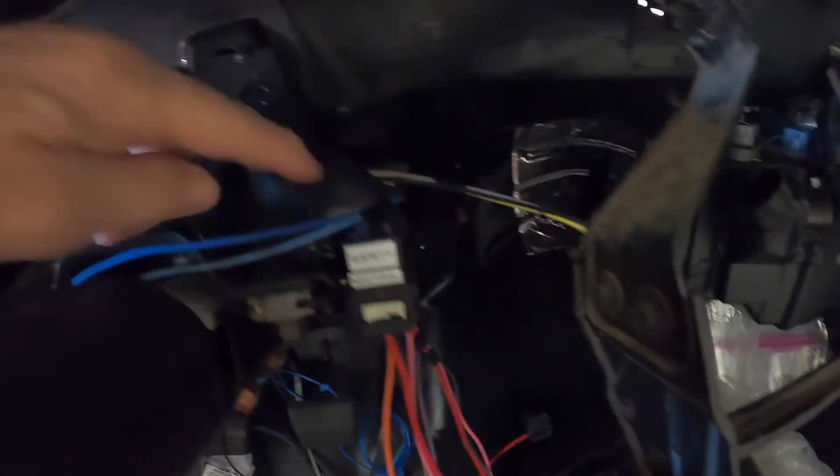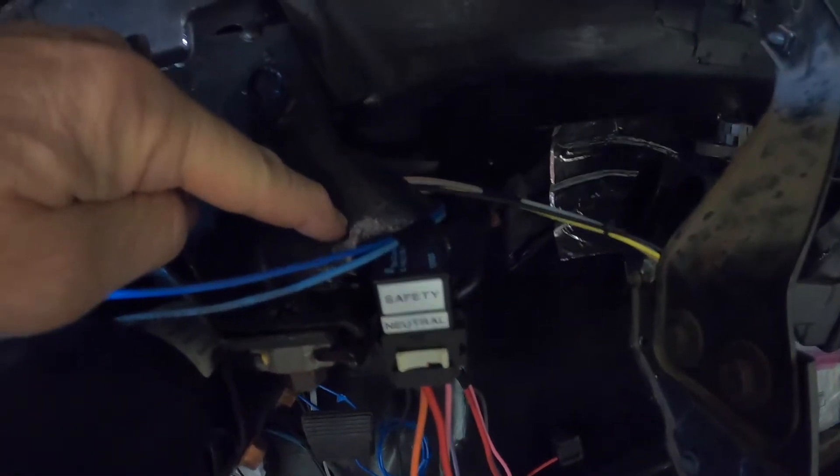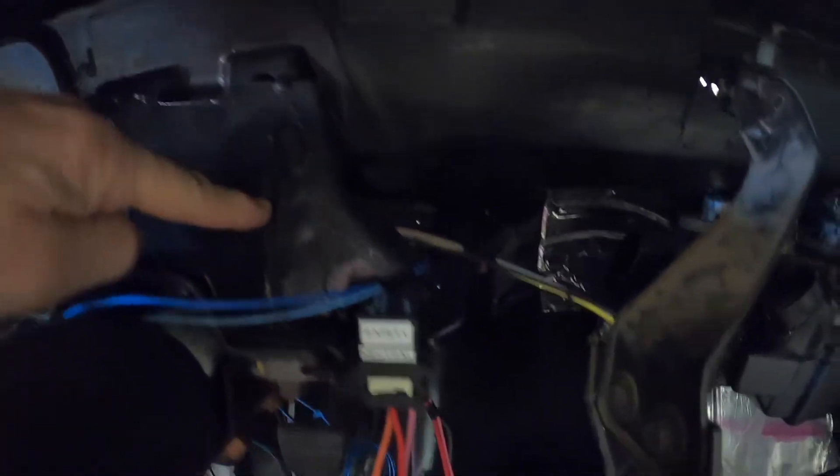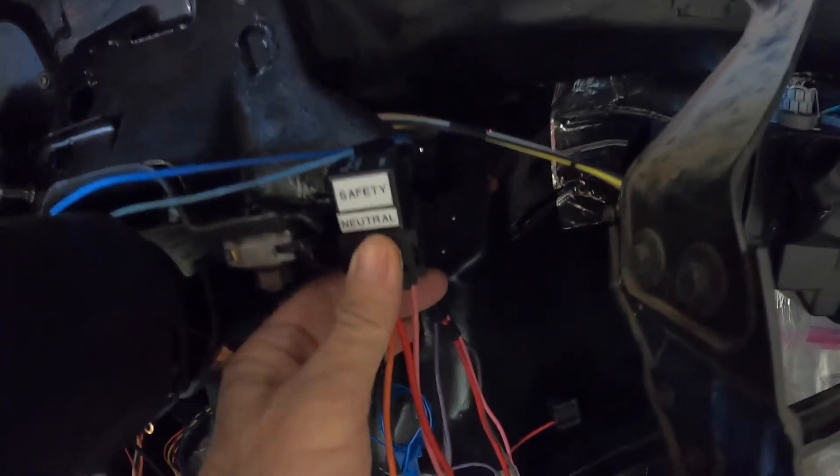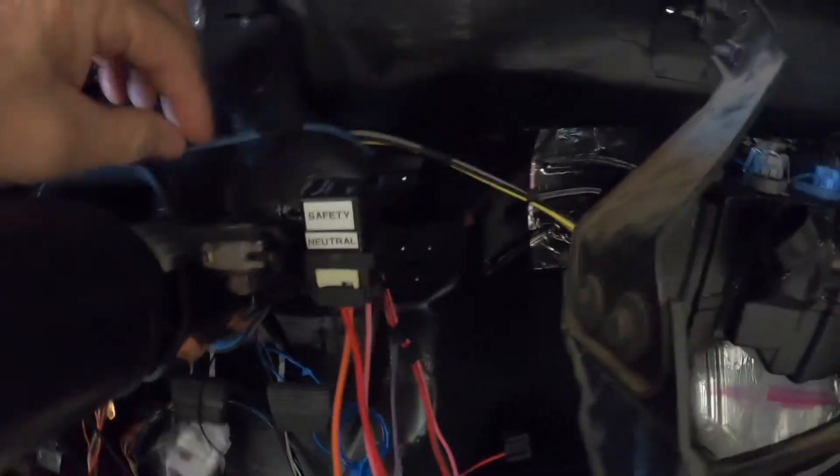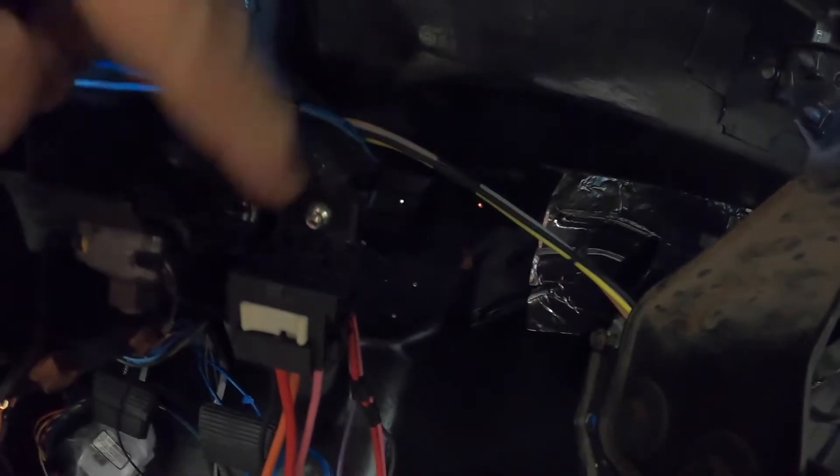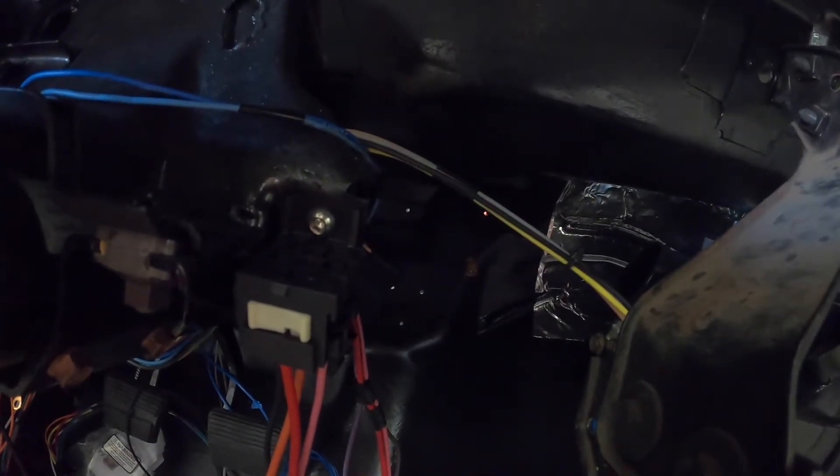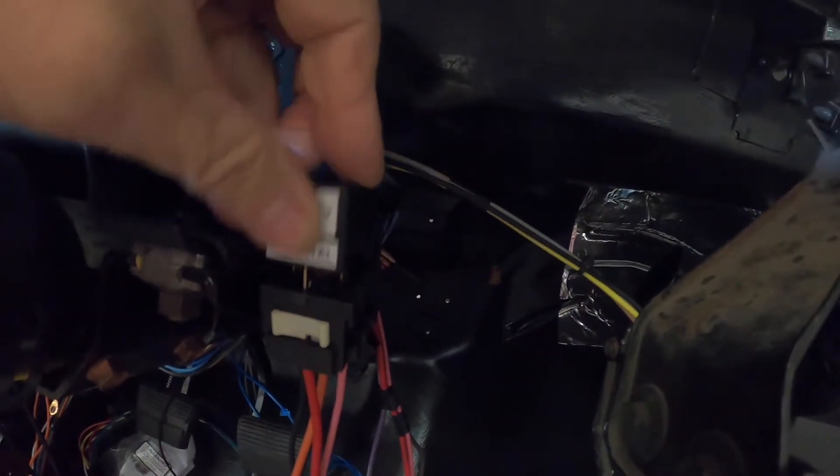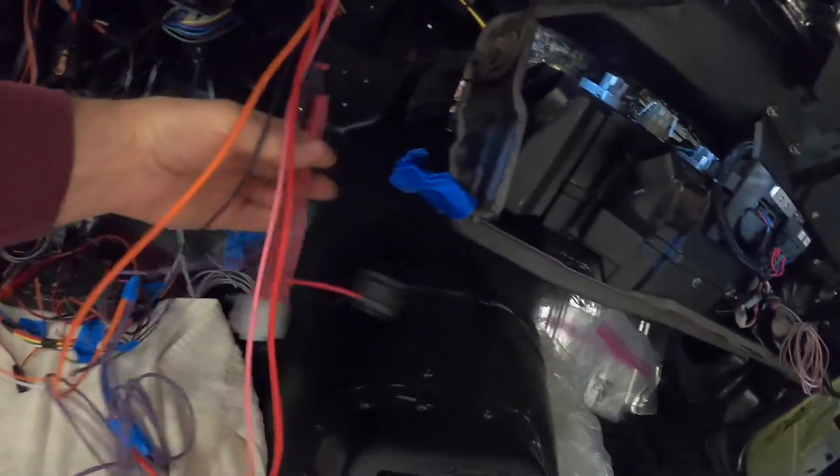And this spot here was like an alignment hole to weld this panel together for the steering column. So this hole here actually worked out pretty good for mounting this safety neutral relay. Here's my little button head Allen. So kind of a convenient location for the safety neutral switch and the rest of the wiring.